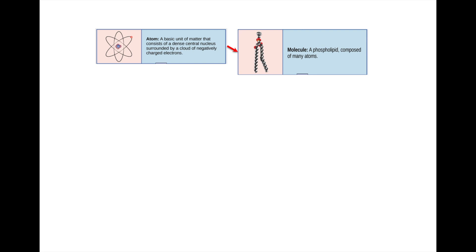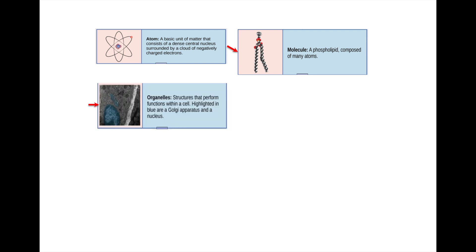If you put atoms together, you get a molecule. This molecule is phospholipid — you're going to see phospholipids quite a lot during this course. When you take these individual atoms and put them together, you form a phospholipid and you get the ability to form a barrier around the cells. Then you organize multiple molecules together and an organelle emerges, which has properties that the individual molecule on its own did not have.